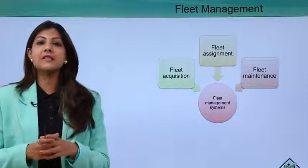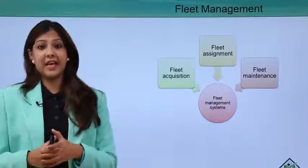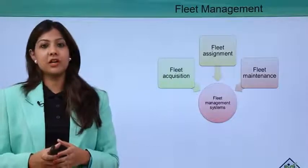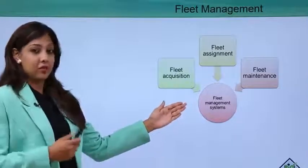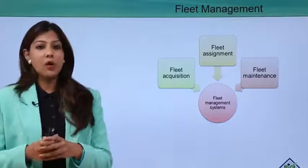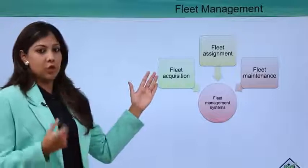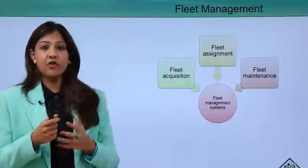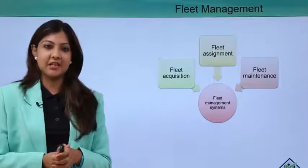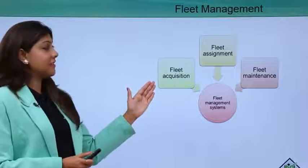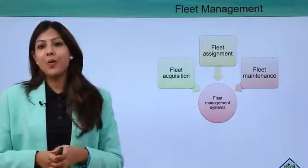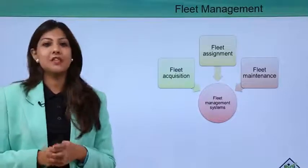Different airlines have different fleets — Boeing, Airbus, or ATRs. Fleet management has three basic criteria: fleet acquisition, where the COO and CEO decide which aircraft to acquire; fleet assignment, where aircraft are assigned to particular routes (e.g., Airbus for certain routes, Boeing for others, ATRs for shorter distances); and fleet maintenance, as aircraft require a lot of maintenance.